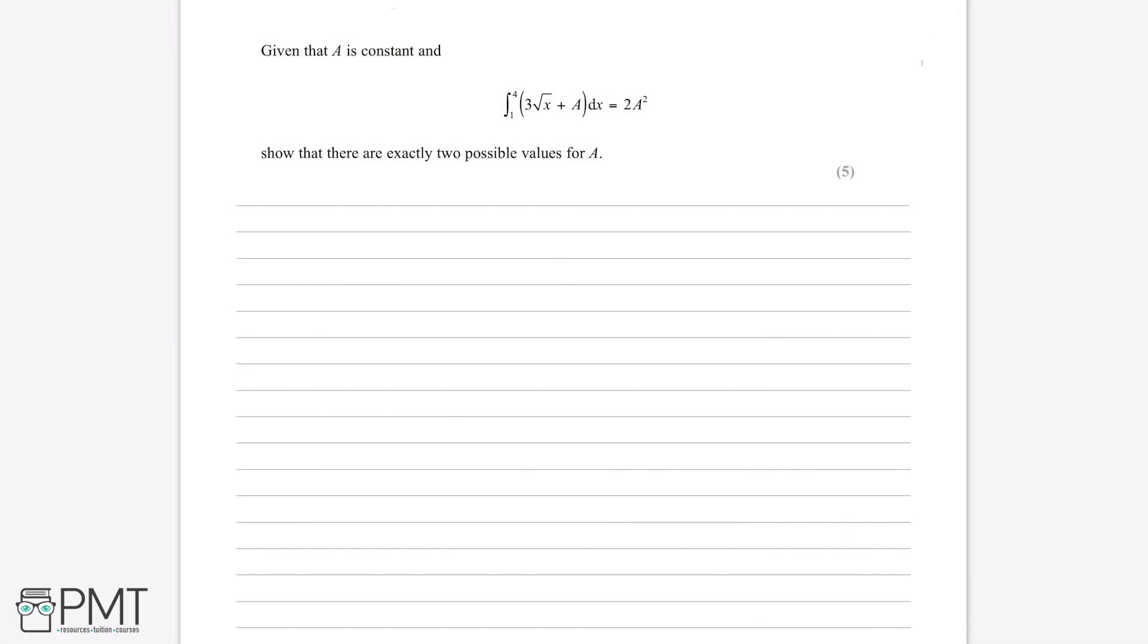Given that a is constant and the integral of 3 root x plus a dx between the limits of 1 and 4 is equal to 2a squared, show that there are exactly two possible values for a.